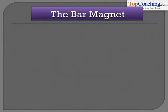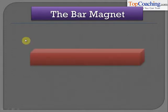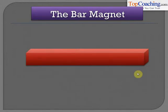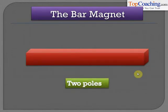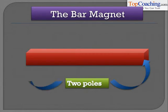Let us understand what a bar magnet is. I'm sure you must have seen a bar magnet in your laboratory or heard of it in lower classes. A bar magnet is simply a bar-shaped substance that attracts iron pieces to itself. It has two poles or two ends — the north pole and the south pole.